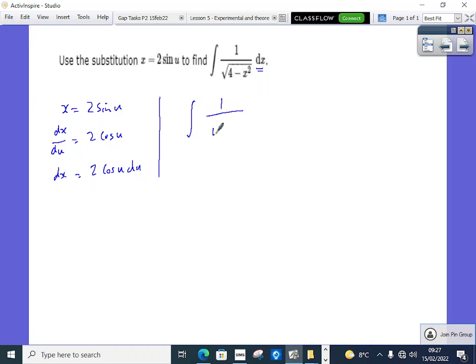So it's 4 minus now the square of, so if I know it's telling me use x equals 2 sine u, x squared is going to be 4, because 2 times 2 is 4, sine squared u. So I'm going to get 4 sine squared u.